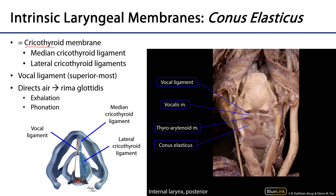The three parts of the conus elasticus are: the lateral cricothyroid ligaments, located on either side; the median cricothyroid ligament in the center; and its superior-most part, the vocal ligament, which runs from the vocal process of the arytenoid cartilage to the thyroid cartilage. When invested by mucosa, the vocal ligament becomes the vocal fold — also known as the vocal cord.